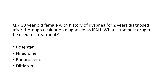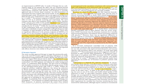Next question: a 30-year-old female with dyspnea for two years, diagnosed as IPAH after thorough evaluation — what is the best drug for treatment? Options are bosentan, nifedipine, sildenafil, and iloprost. The answer is bosentan. Bosentan is a dual endothelin receptor A and B antagonist. In trials of IPAH patients, bosentan improves six-minute walk distance by 44 meters compared to placebo, and survival was 96% at one year and 89% at two years, compared to expected survival of 69% and 57% respectively.